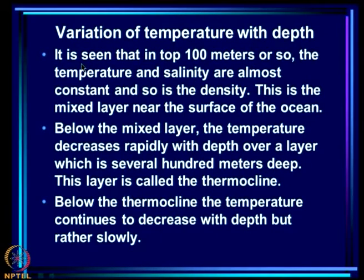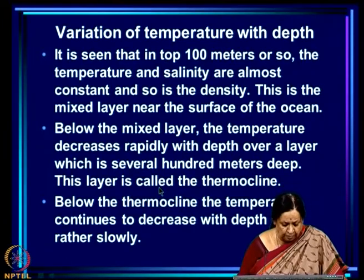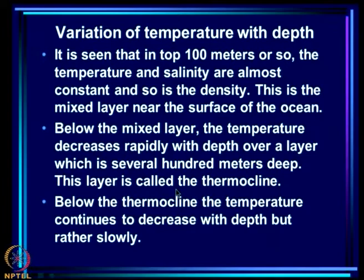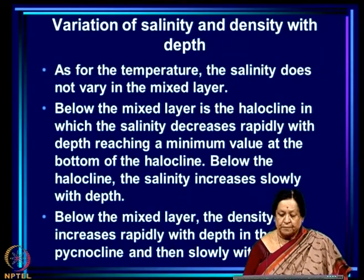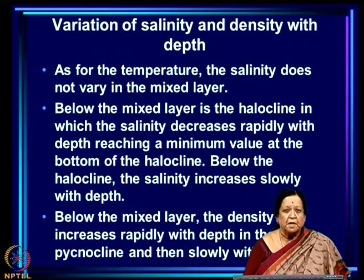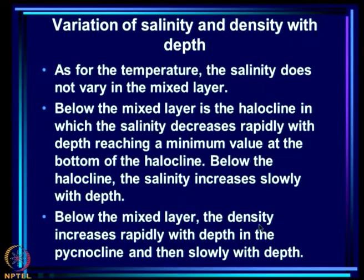In the top 100 meters or so, temperature, salinity, and density are almost constant — this is the mixed layer near the surface of the ocean. Below the mixed layer, temperature decreases rapidly with depth over a layer several hundred meters deep — the thermocline. Below the thermocline, temperature continues to decrease but rather slowly. For salinity, below the mixed layer there is a halocline where it decreases rapidly to a minimum, then increases slowly. Below the mixed layer, density increases rapidly in the pycnocline, which coincides with the thermocline and halocline, then increases slowly. This is a very rapidly increasing, very stable situation.